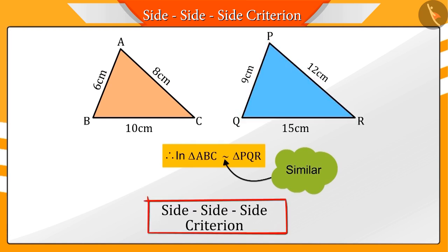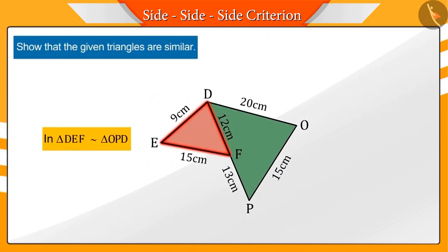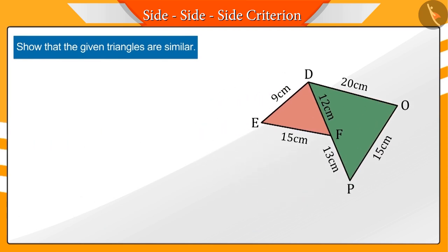Let's look at another example. Show that the triangles DEF and OPD are similar in the given figure. What can you say by looking at the figure? We can see in the figure that the ratio of the corresponding sides DE and OP in these two triangles comes out to be 3 by 5.